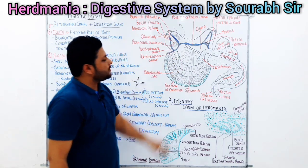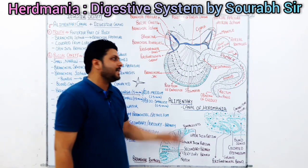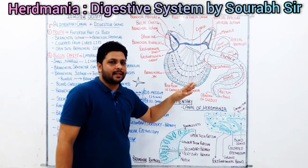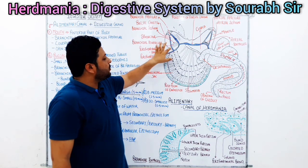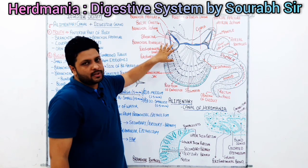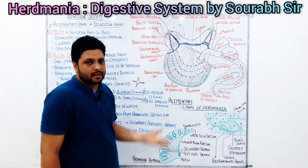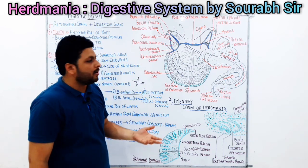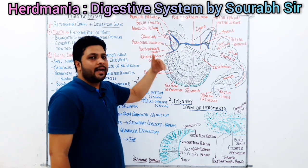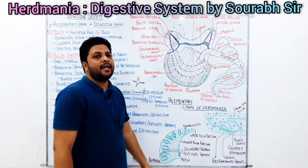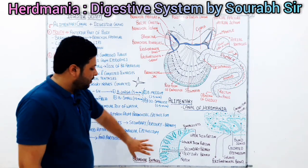We have branchial tentacles and atrial tentacles to discuss. The branchial tentacles are in lower positions, and the sphincter is available. The branchial tentacles are structures present within the buccal cavity.